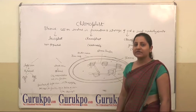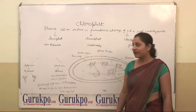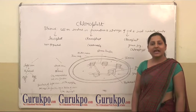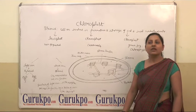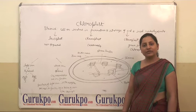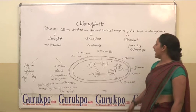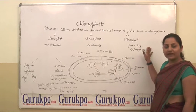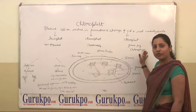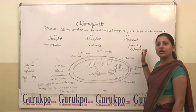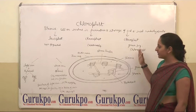Leucoplast kind of plastids are non-pigmented. Chromoplast contain carotenoids, so they provide colors to different fruits and flowers. Chloroplast is a green pigment that is chlorophyll and this is responsible for photosynthesis.